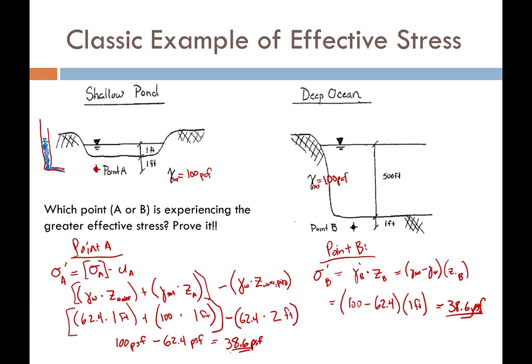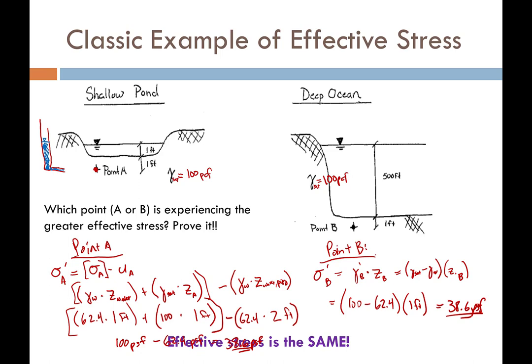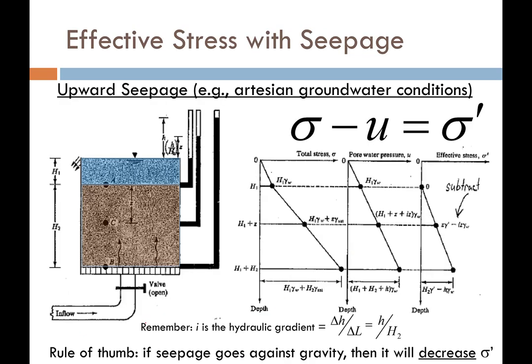The moral of this example: it doesn't matter how much surface water is above our soil. All that matters for particle-to-particle stresses is the weight of the overlying soil being transmitted. Since both points are only one foot beneath the ground surface, both have the same effective stress.